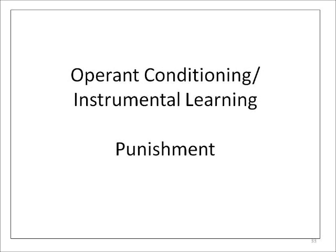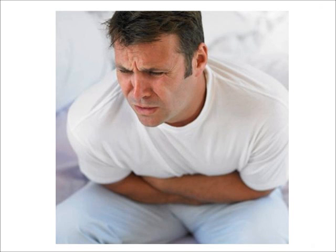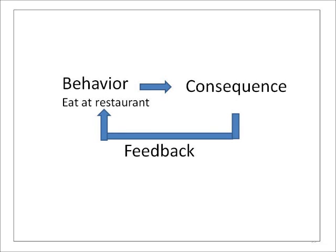In operant conditioning, a behavior that results in an undesirable outcome is termed a punishment. This type of consequence results in decreasing the probability of the behavior in the future. Getting food poisoning after eating at a restaurant will likely decrease the chance that you will want to eat at that restaurant in the future. This is an example of punishment.